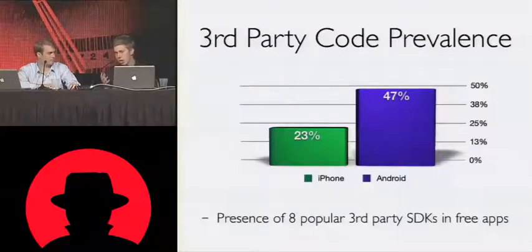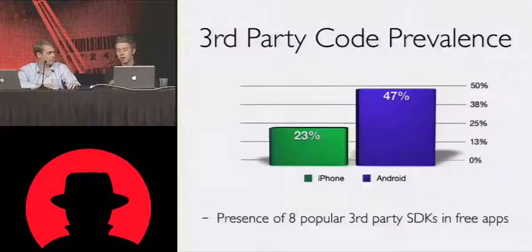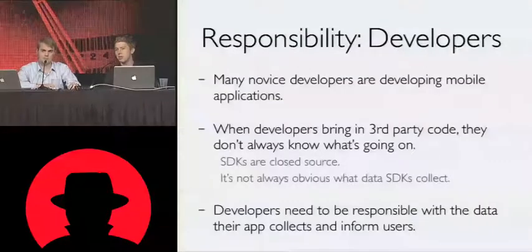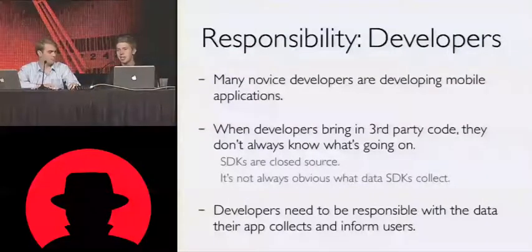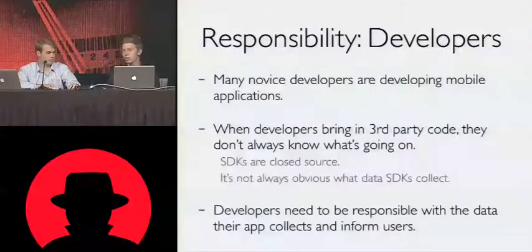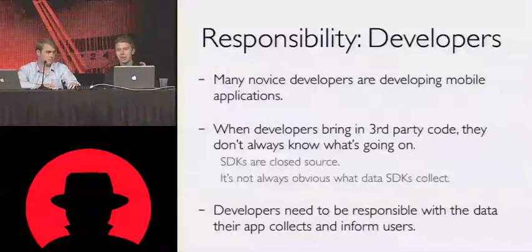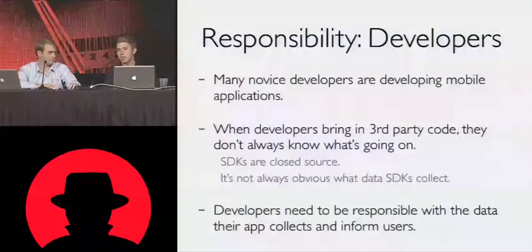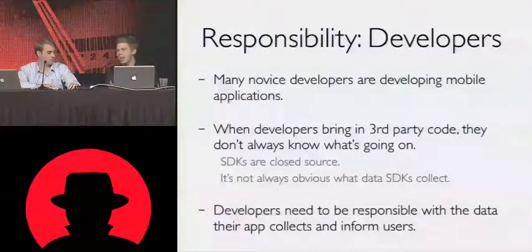When we looked at the prevalence of third-party code as a whole, we found it was quite prevalent on both iPhone and Android — 23% of applications had one of eight popular SDKs in them, 47% on Android. We're seeing developers share code and these SDKs get adoption. Our goal is to help people understand what is going on inside applications. There are a lot of novice developers who just bring in an SDK, and we want to make sure people understand the ramifications. When a developer brings in third-party code, they don't always know what's in it, and because it's closed source, even very experienced developers don't know what's in it. But on Android, a developer gets to choose permissions — they don't have to blindly copy and paste permissions from an SDK's instructions.